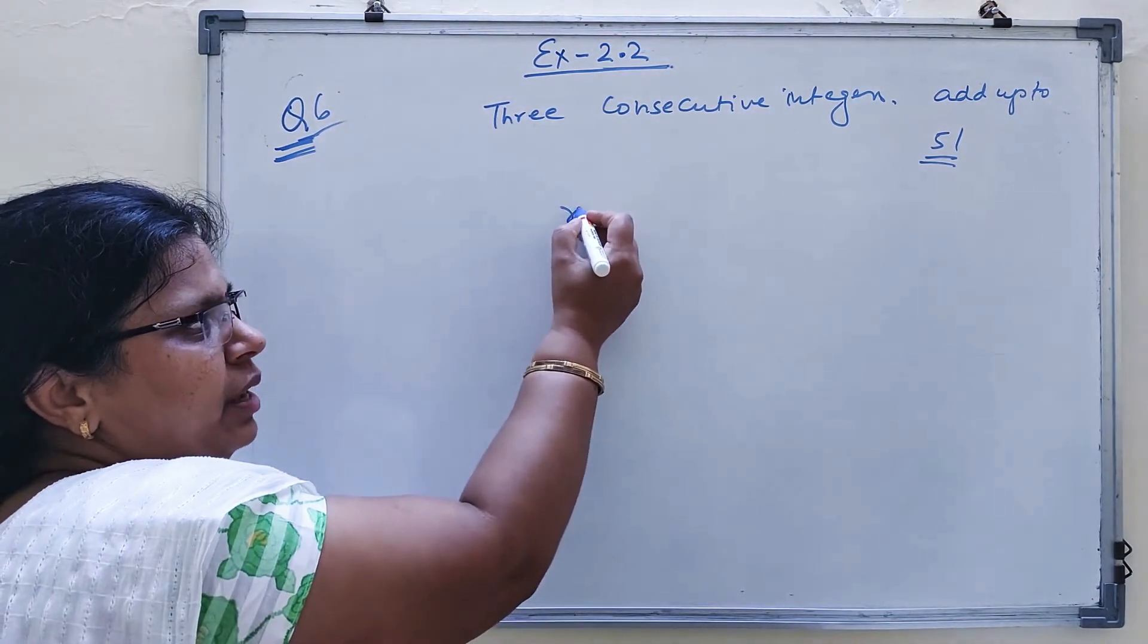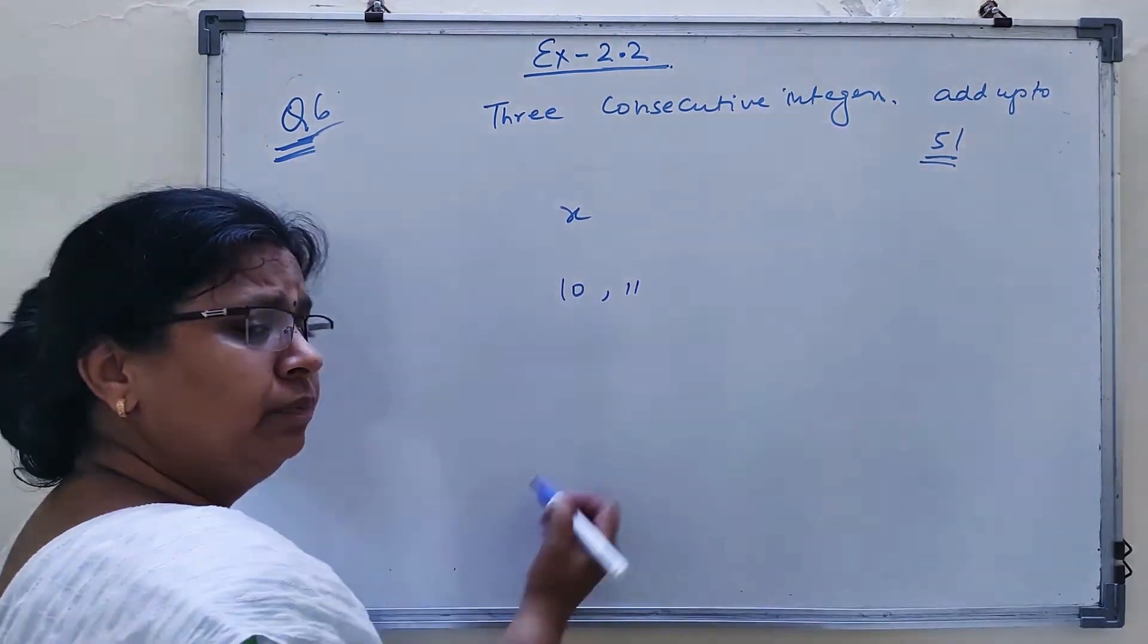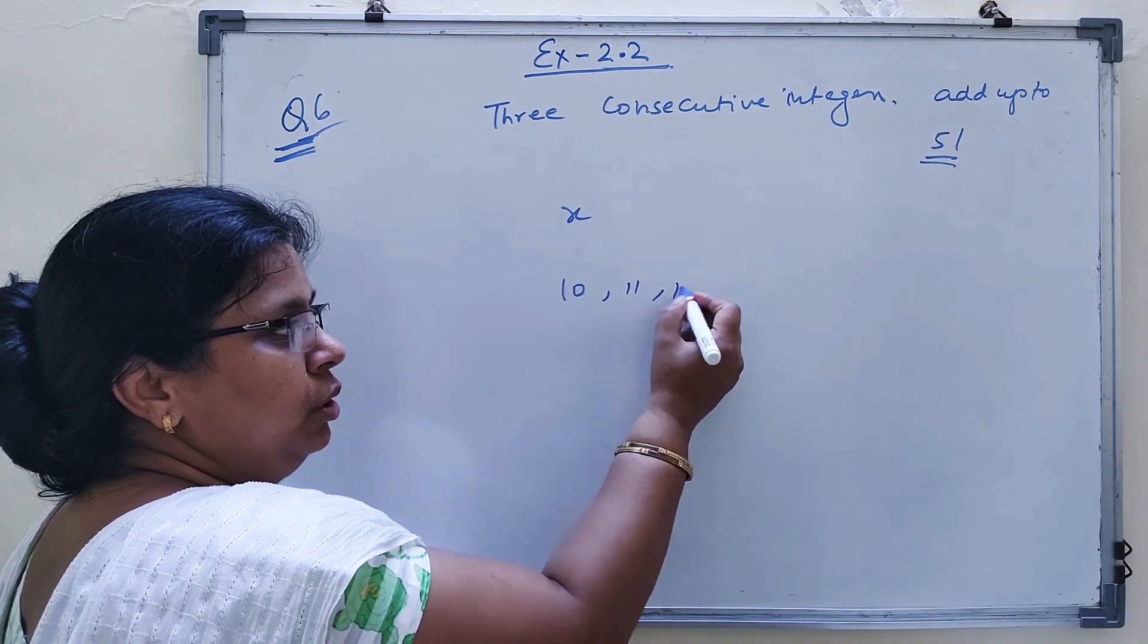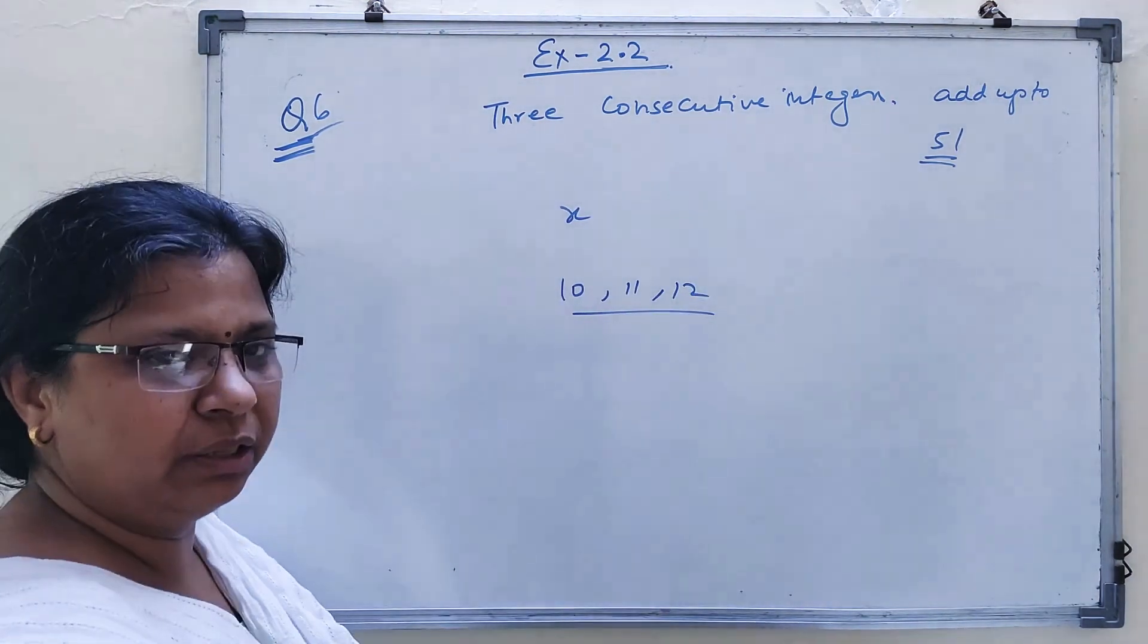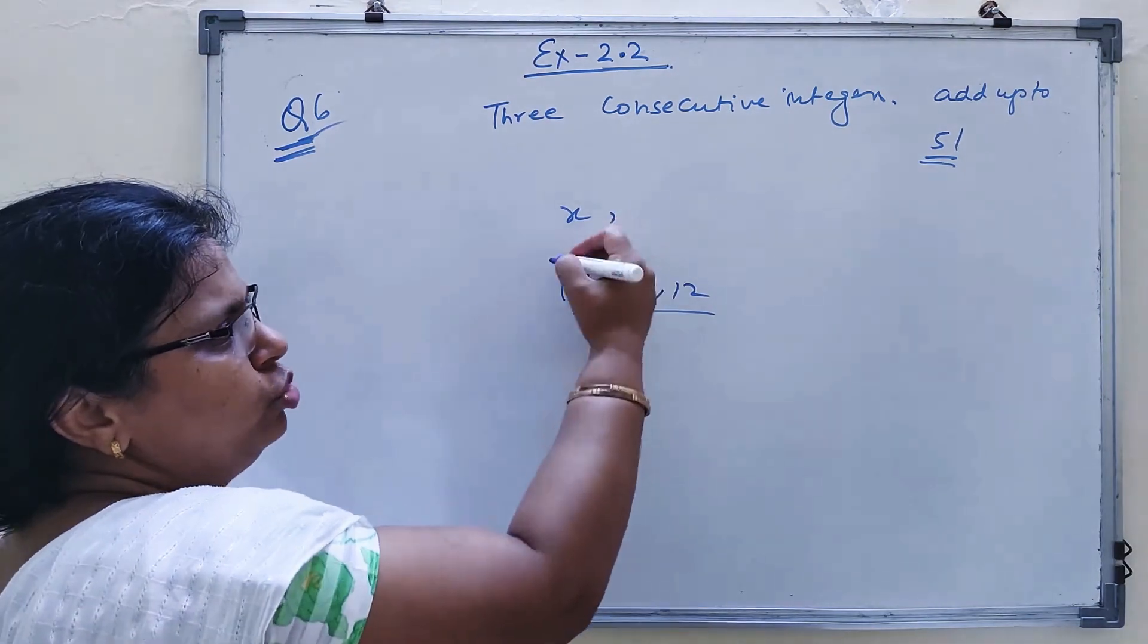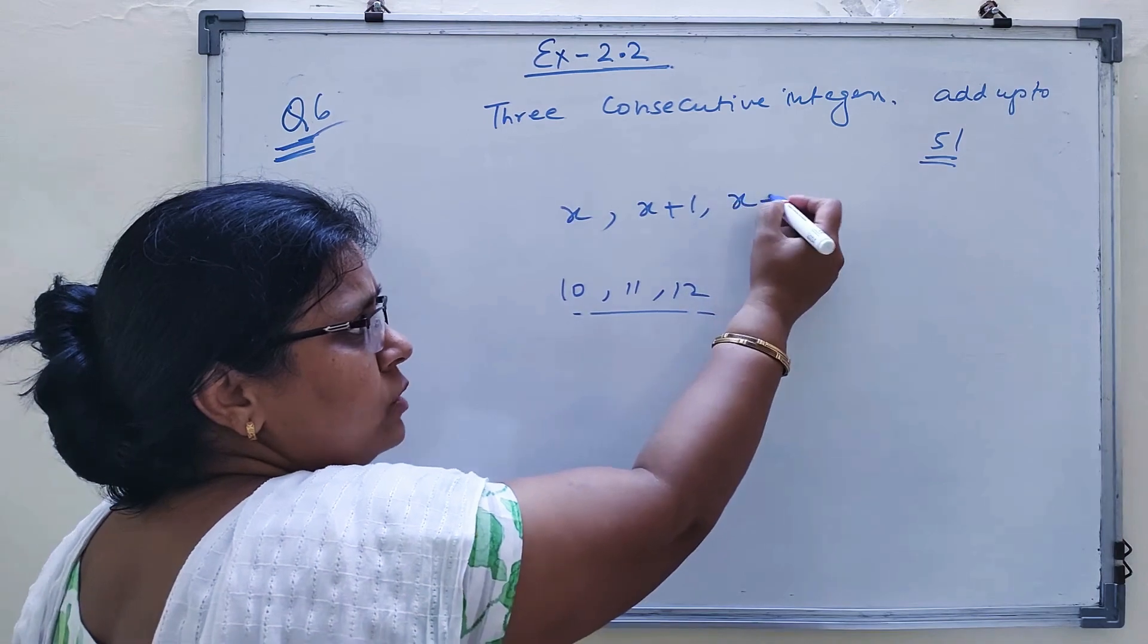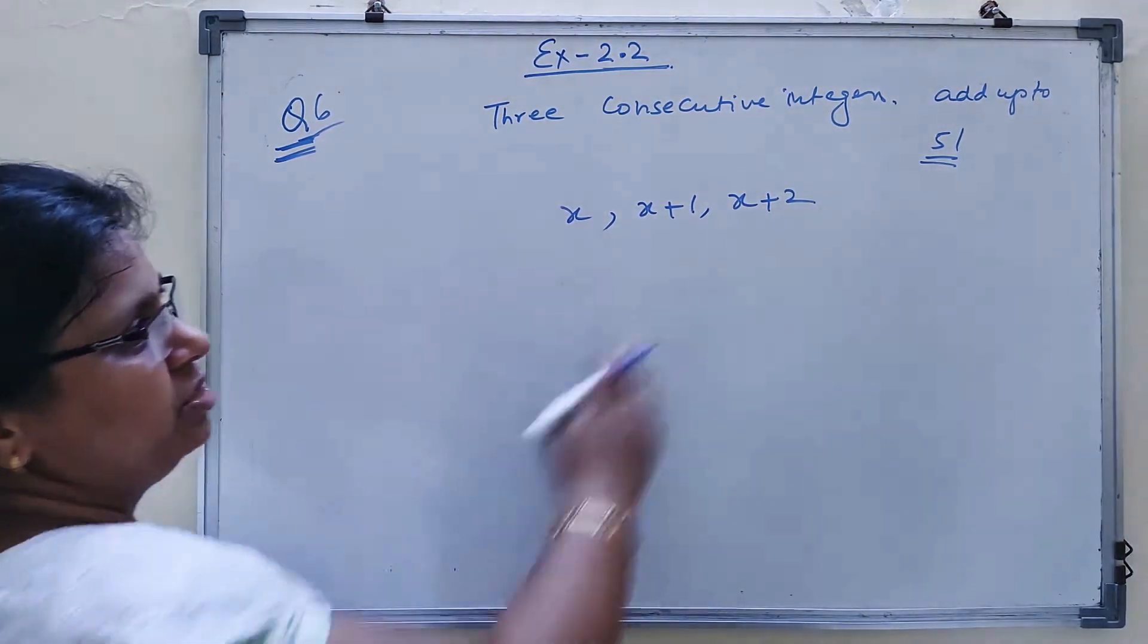Consecutive means they come in sequence, adding 1 each time. For example, if my first number is 10, the next number will be 11, then 12. So if my first number is x, the second number will be x plus 1, and the next number will be x plus 2. These are the consecutive integers.